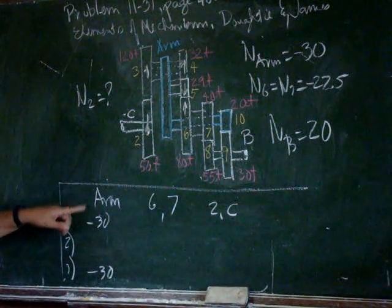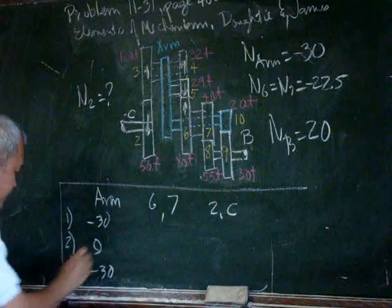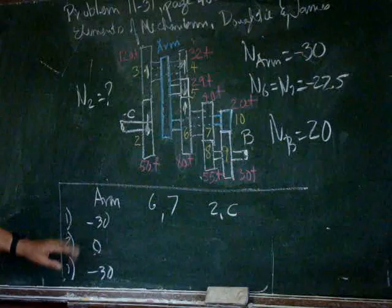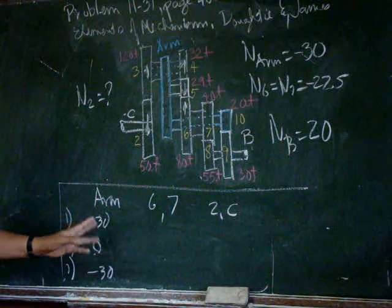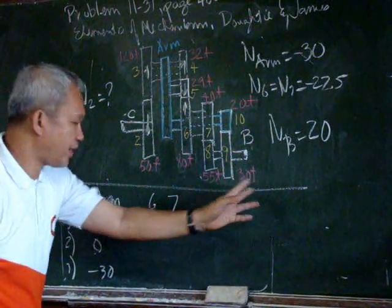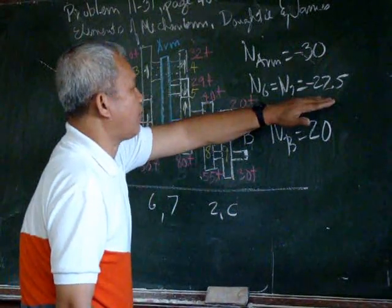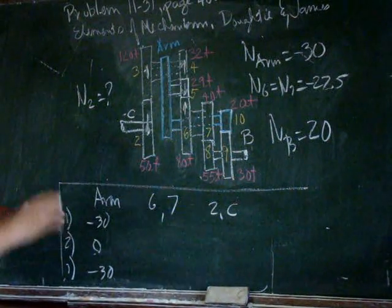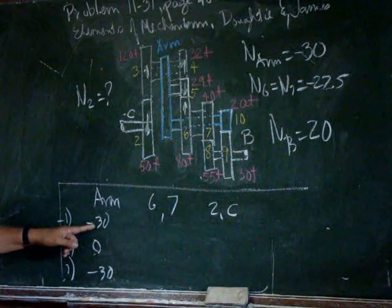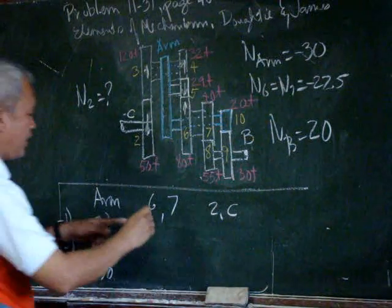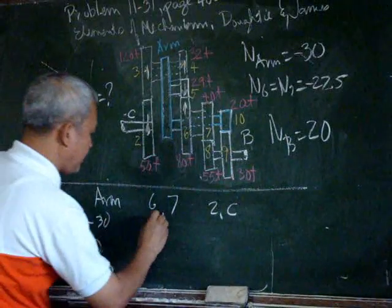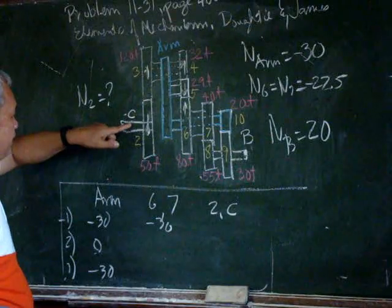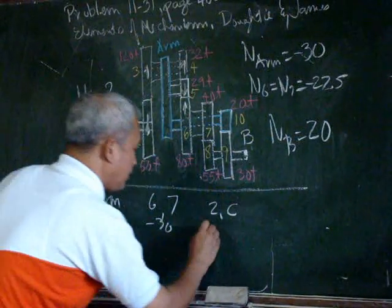We give the arm negative 30 because in the next step of the epicycle train solution, the arm must be fixed. As a first step, we lock them all together: we rotate the arm negative 30, we rotate gears 6 and 7 negative 30, and we also rotate shaft C and gear 2 with negative 30.